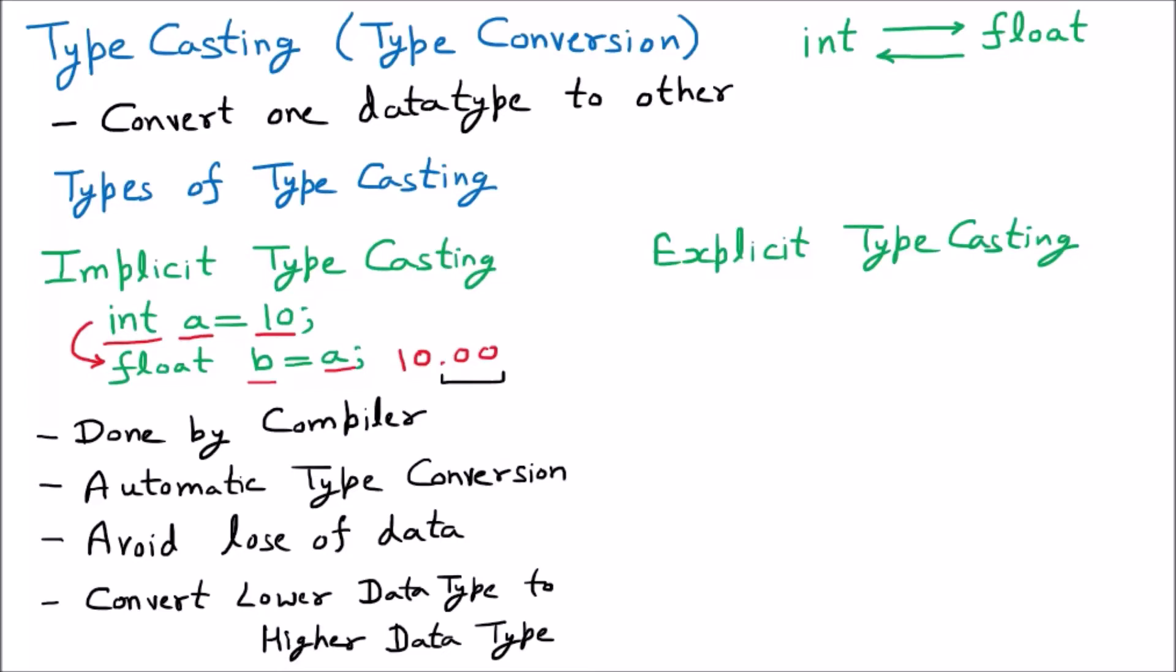Now we are discussing explicit type casting. Let me give you an example to make you understand. Suppose I have declared float a and the value of float a is 10.3.